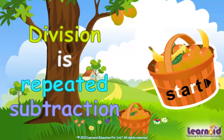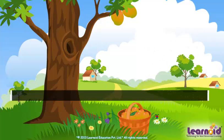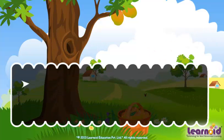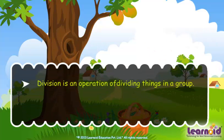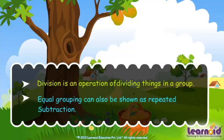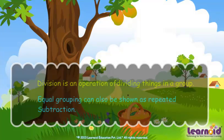Today we will learn that division is repeated subtraction. Division is an operation of dividing things in a group. Equal grouping can also be shown as repeated subtraction.